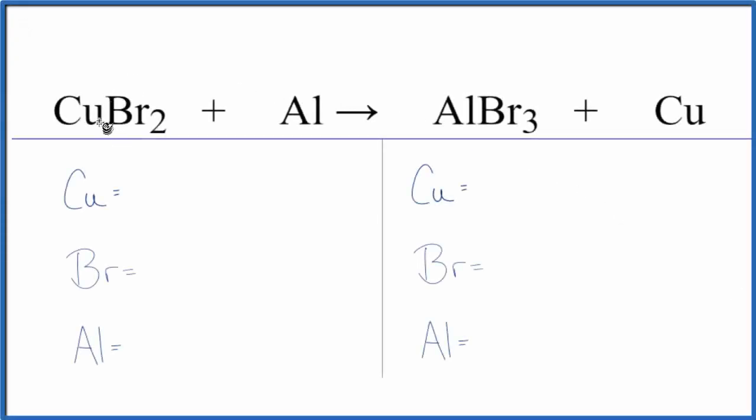In this video, we'll balance the equation for CuBr2 plus Al. Copper 2 bromide plus aluminum. Single displacement reaction here where the aluminum pushes the copper out, copper is by itself, and then this aluminum is bonded to the bromine.